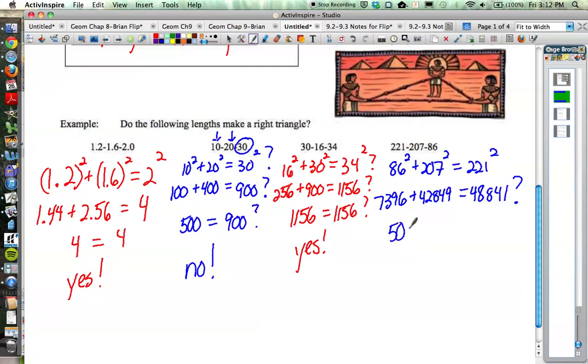That does not work out. These add to 50,245. Does that equal 48,841? No, it does not. So this would not be a right triangle. And that is the converse of the Pythagorean theorem and how you would use it to determine if a triangle is a right triangle.